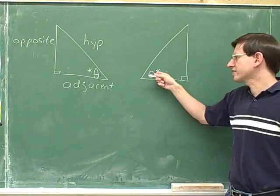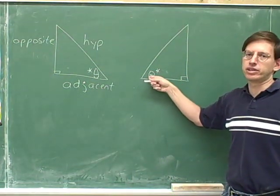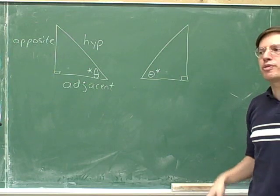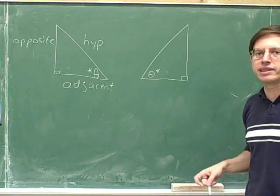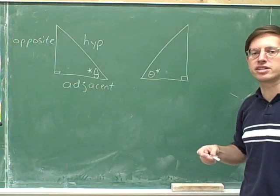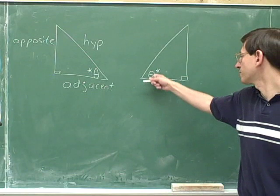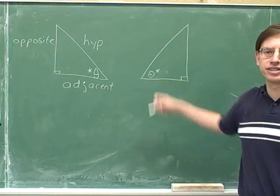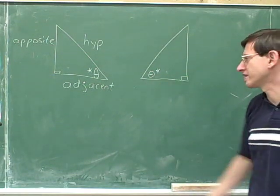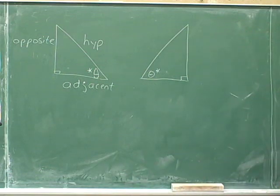I'm using this asterisk to indicate that we're focusing on this angle down here. Can you please try to pause the video and label the hypotenuse, the adjacent side, and the opposite side when we're focusing on this angle down here? Label the hypotenuse, adjacent, and opposite sides like we did for this triangle.